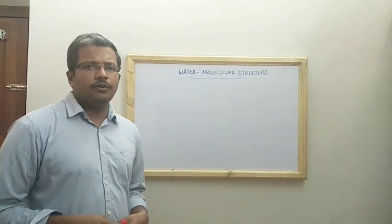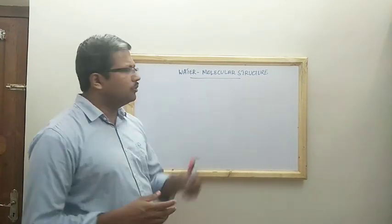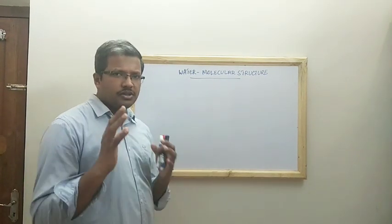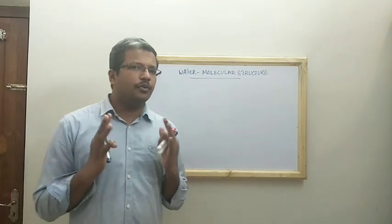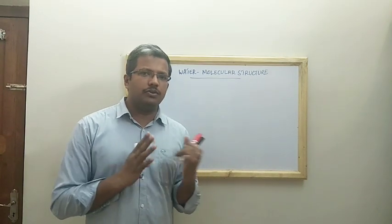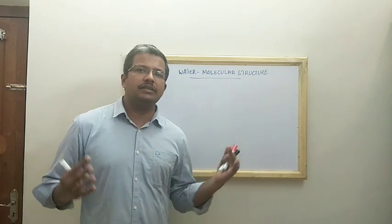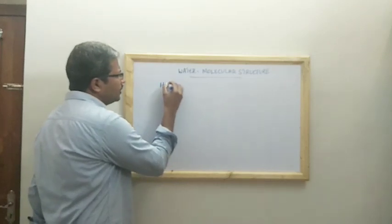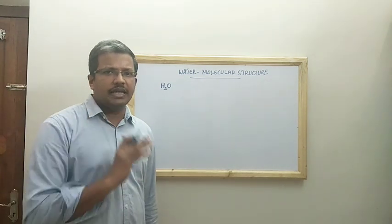Welcome students. In this lesson we will be discussing the molecular structure of water. This comes under the first unit of the biochemistry chapter. We know that water is formed of one oxygen combining with two hydrogen atoms — water is H2O. One oxygen combines with two hydrogens to form water.